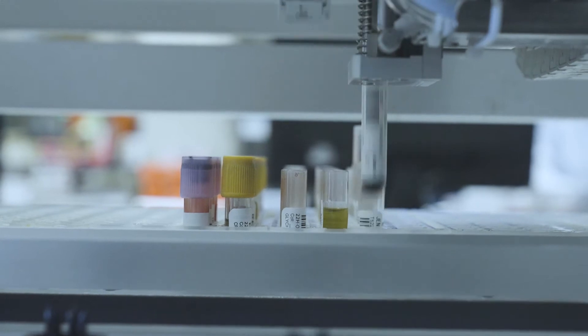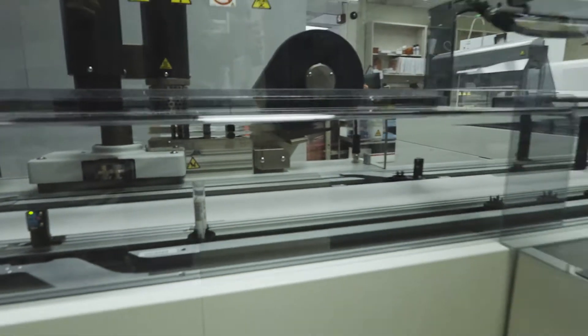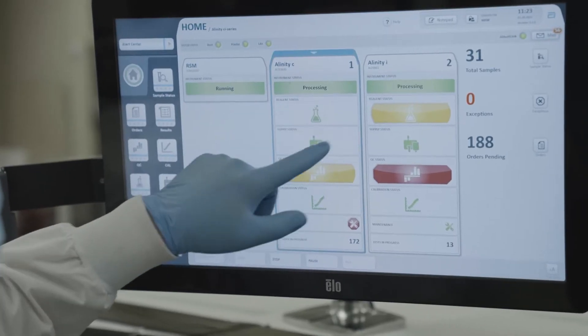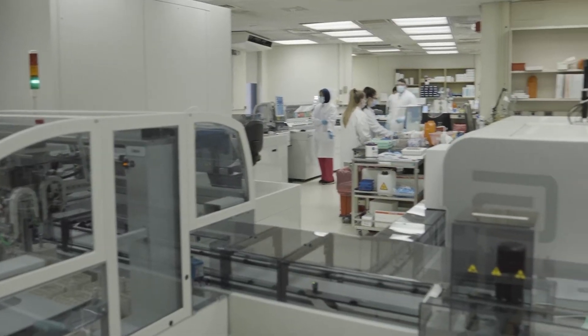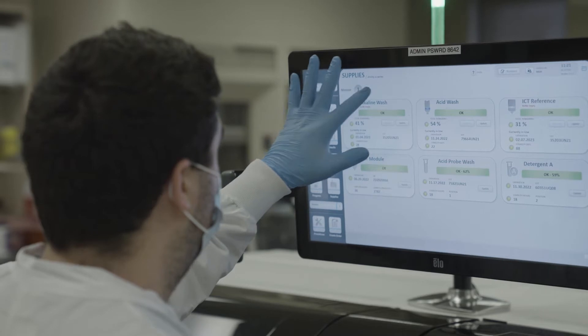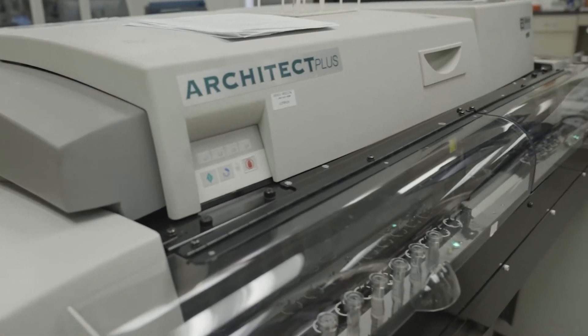This receives about 1,500 to 2,000 tubes a day. We'll process them and sort them out. The software is the most up-to-date that we could possibly have. It's double the amount of specimens that our old track held. It also moves at double the speed. Our menu is about 40 to 50 tests between both analyzers that we can run.